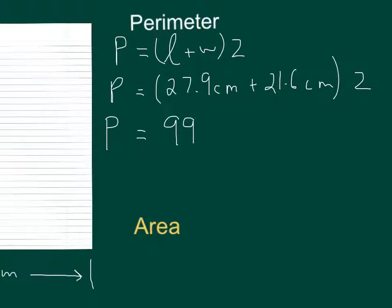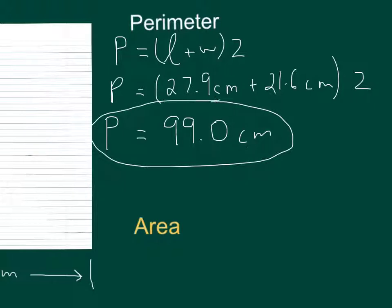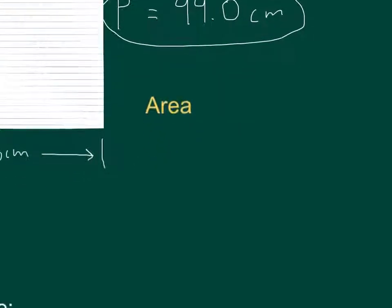The rule for adding and subtracting with significant digits: go to the least number of decimal places. Both 27.9 and 21.6 each have one decimal place, which means our final answer goes to one decimal place — so 99.0 centimeters. That is our perimeter to the correct number of significant digits.